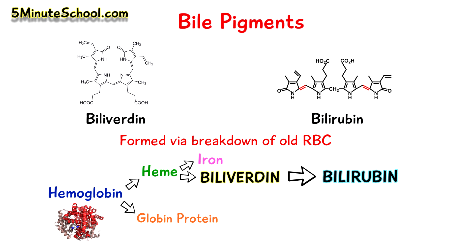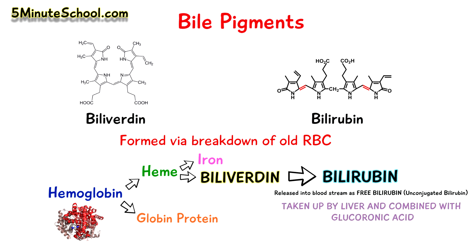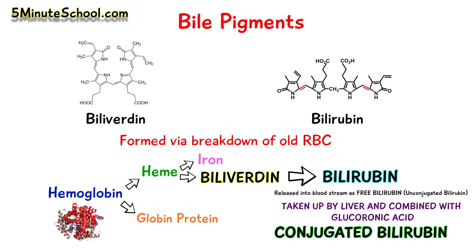The bilirubin is then released into the bloodstream from the reticuloendothelial cells. This bilirubin circulating in the bloodstream is known as free bilirubin or unconjugated bilirubin. It is then taken up into the liver and joined with glucuronic acid to form conjugated bilirubin.